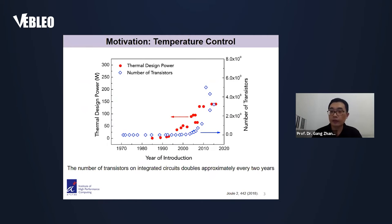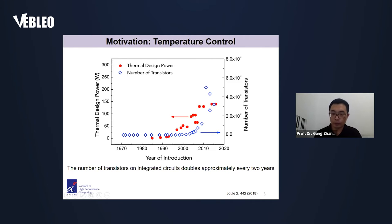When we started on thermotransport, the first motivation is for temperature control. This figure shows the number of transistors on an IC device — it roughly doubles about every two years. This is the year axis, and this is the number of transistors. You can see the increase. And also, at the same time, the thermal load in the device is also increased.